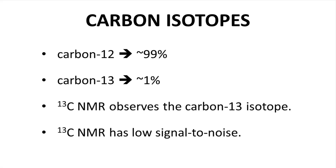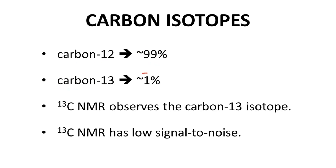How about carbon? Carbon atoms are about 99% the carbon-12 isotope, which is not an NMR active isotope. Instead, we visualize the carbon-13 nucleus, with just 1% abundance. The signal from our sample for a C13 spectrum is much weaker relative to a proton spectrum. The signal-to-noise value is also much lower.